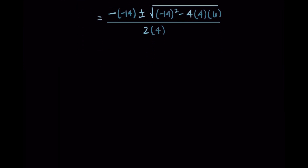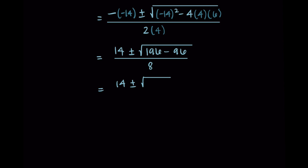Now we simplify — at any point you could put this into a calculator. A negative of negative 14 is just positive 14. Then I have 196, which is negative 14 squared, minus 96, which is 4 times 4 times 6 — I used a calculator for this part. This is all over 8. Now 196 minus 96 is 100, so I'm left with 14 plus or minus the square root of 100 over 8. The square root of 100 is 10, so I have 14 plus or minus 10 all over 8.